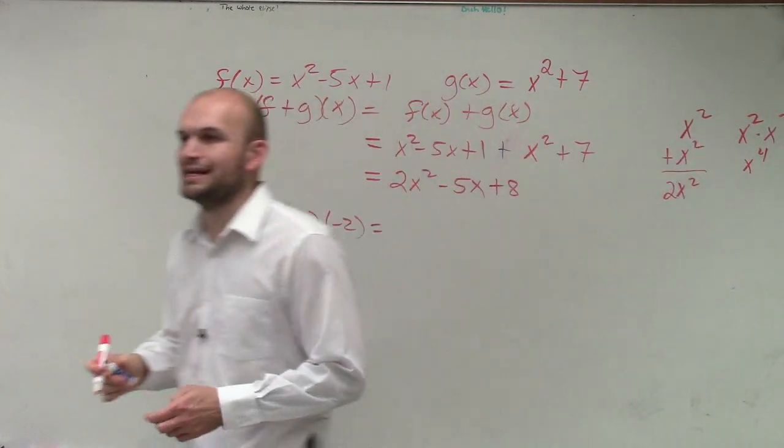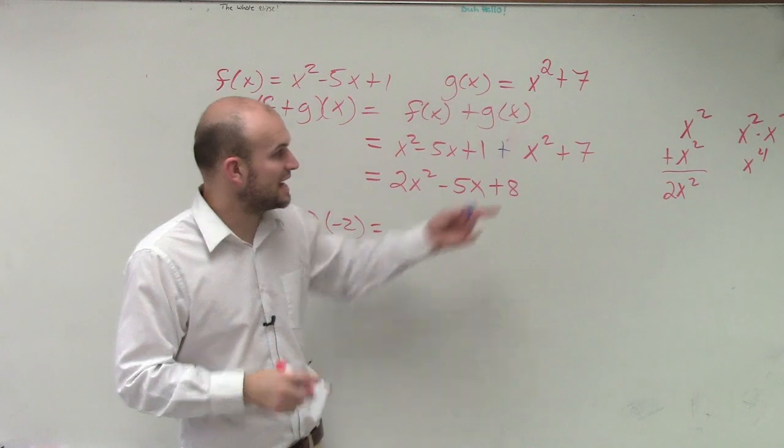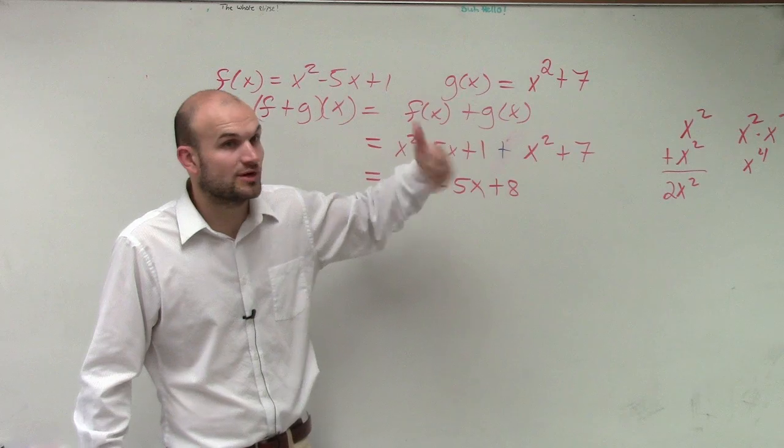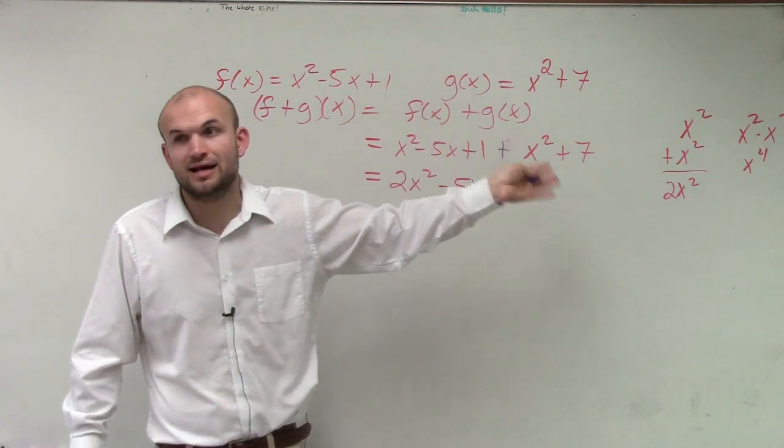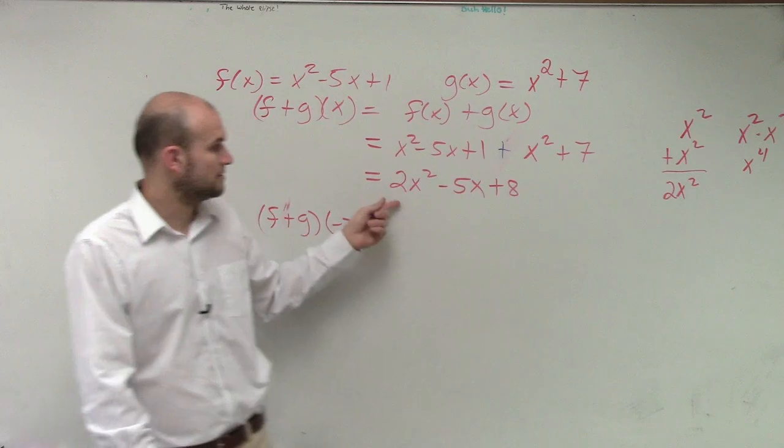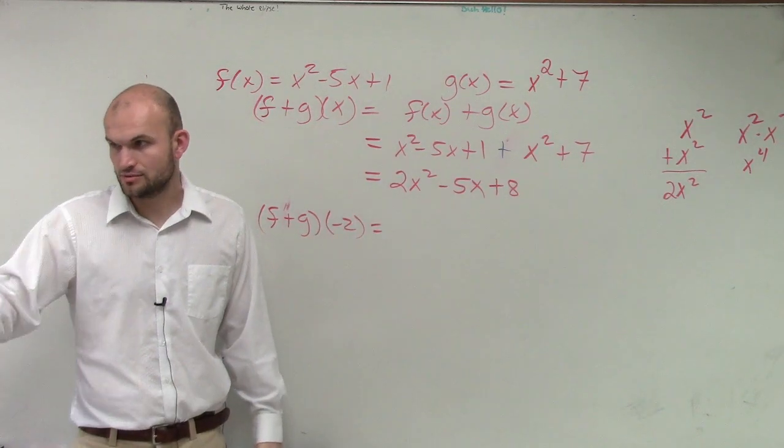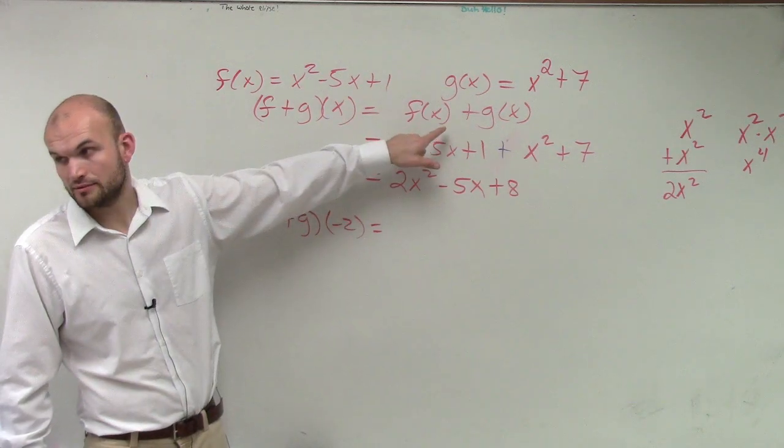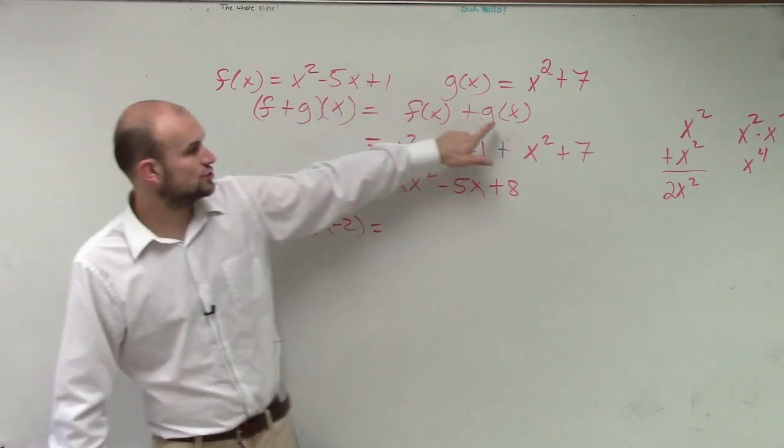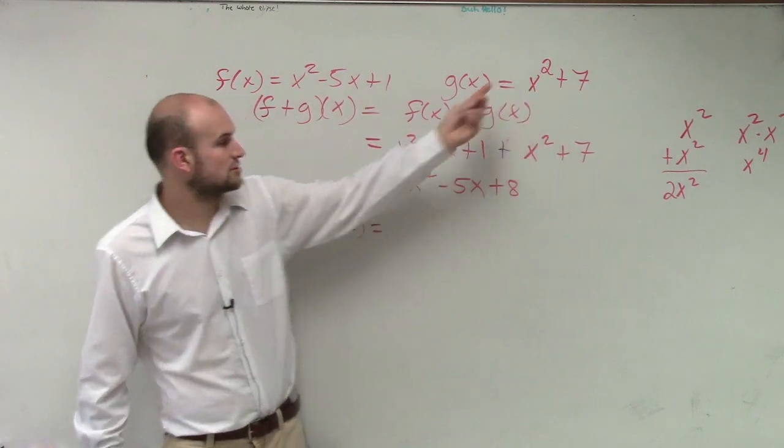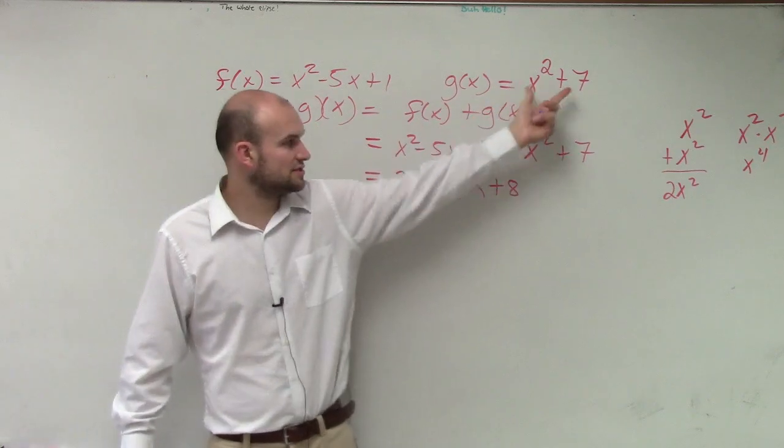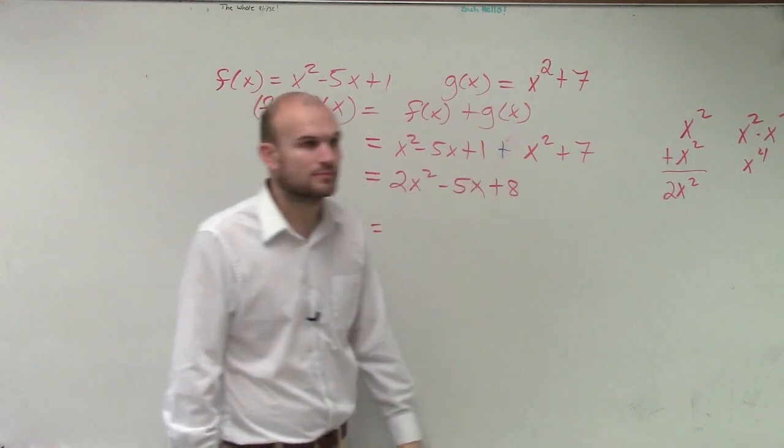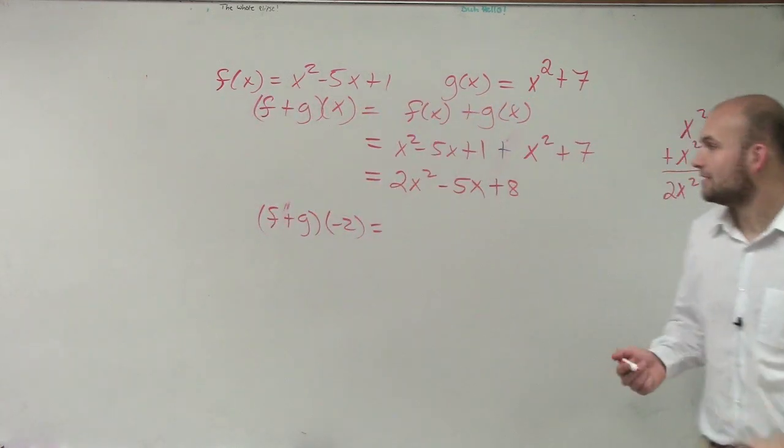Remember guys, when you're adding variables with exponents, x² + x² is 2x². We already talked about this - x² times x² you add the exponents which gives you x to the 4th. So all I did was I took this function, wrote it there, this function wrote it there. It says to add them, so you add them.